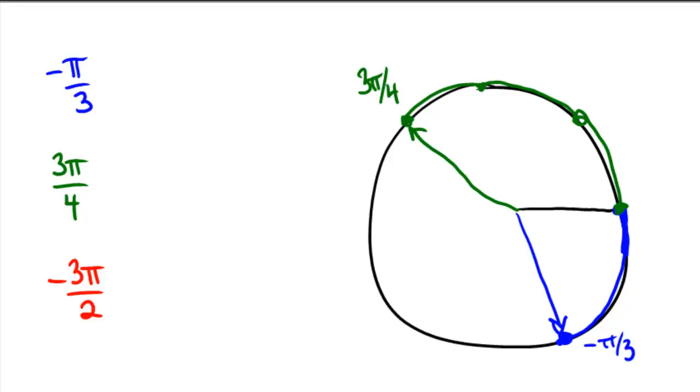And as the final example, we'll go negative 3π over 2. So again, starting at 1, 0, we're going to move 3π over 2 in a clockwise direction. So there's 1π over 2, and here's 2π over 2, notice that's a π. And there's 3π over 2, and so that's the angle of negative 3π over 2. We moved clockwise 3π over 2 radians.